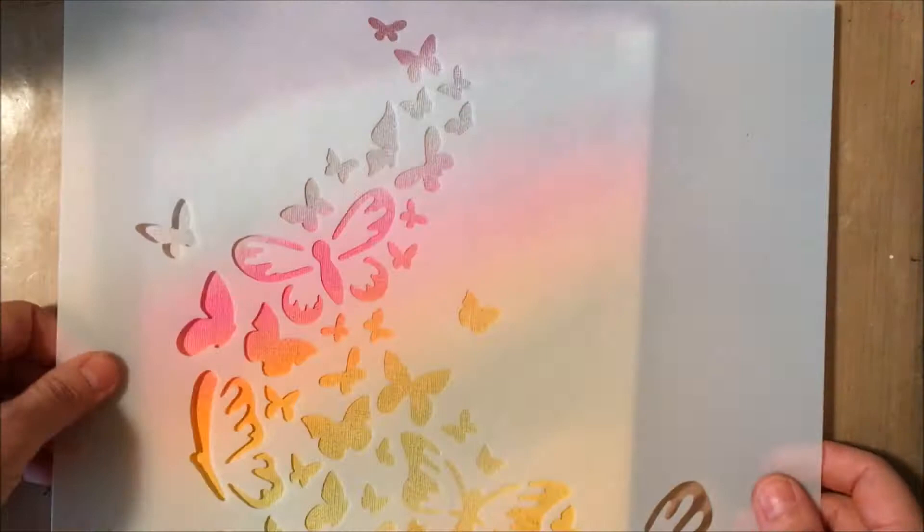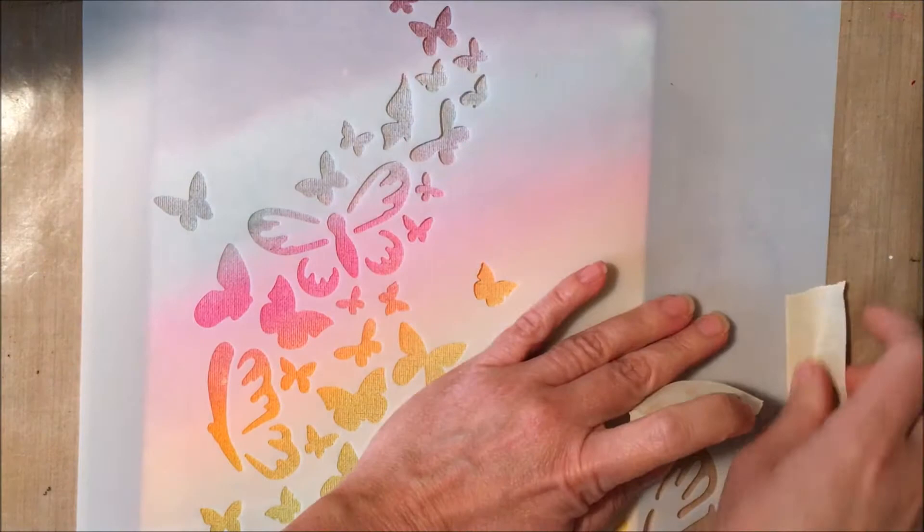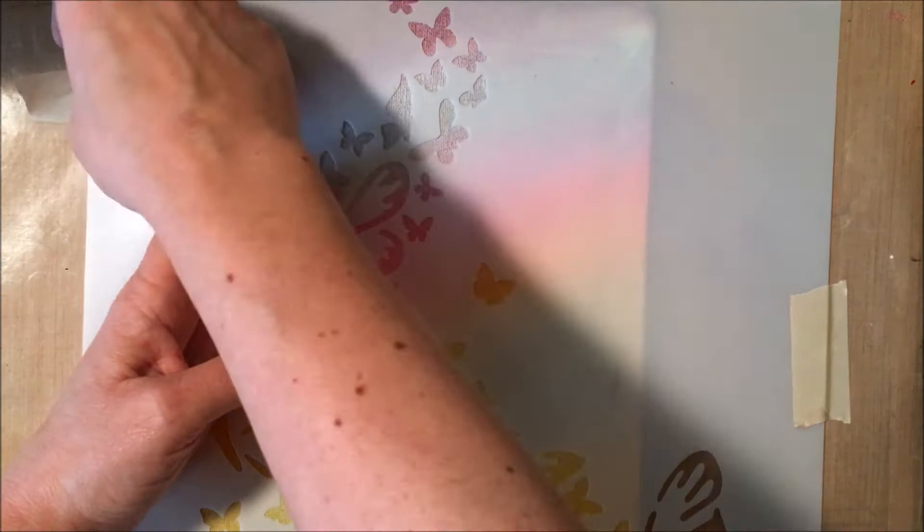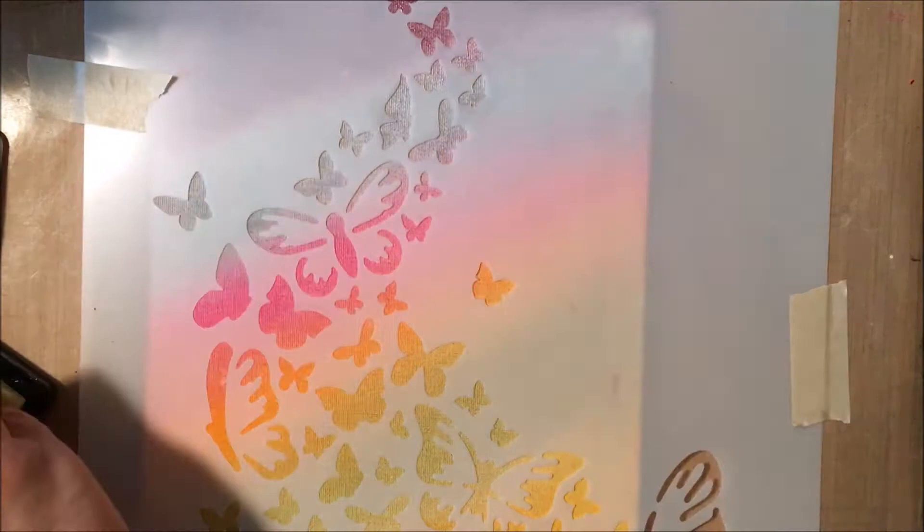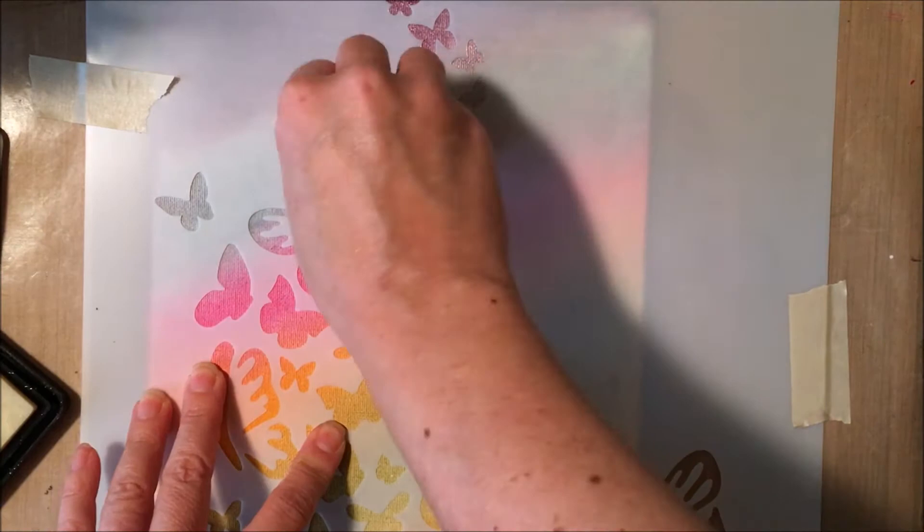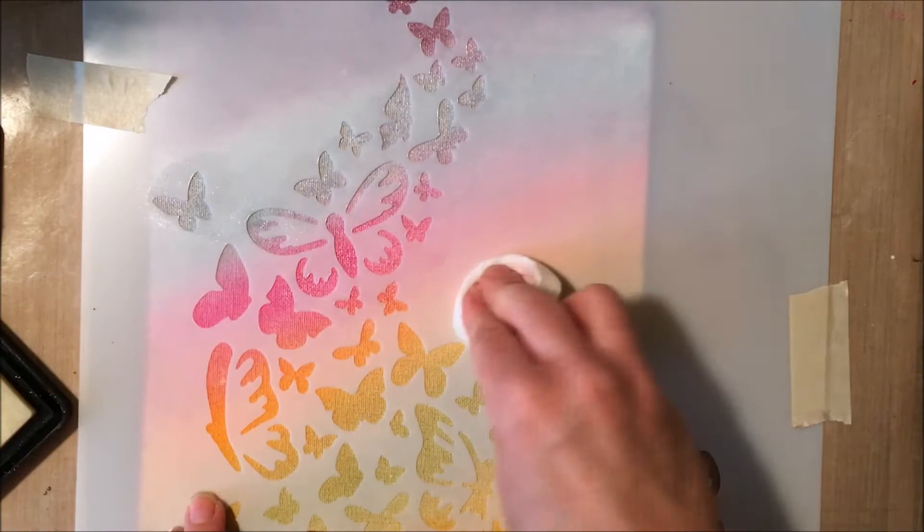And now I'm going to go ahead and put my stencil down on top of the canvas in the area that I want. And I am going to use some masking tape just to hold the stencil down to my craft sheet since this is a pretty large stencil. This is the 12 by 12. I didn't want it moving around. And now I have a makeup sponge and I am pouncing that into my embossing powder pad and then pouncing that through my stencil.